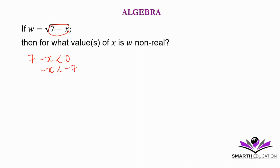You can divide both sides by negative 1. And then if you do that, the inequality sign changes. So it becomes x greater than 7. If x is greater than 7, then w will be non-real.